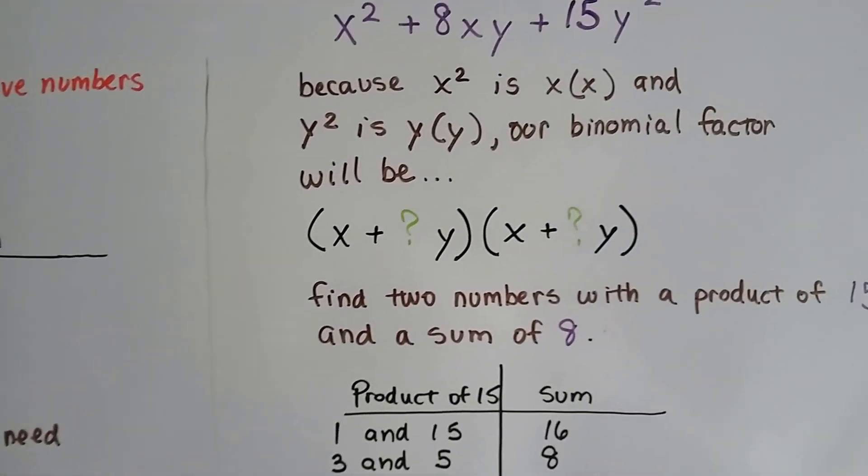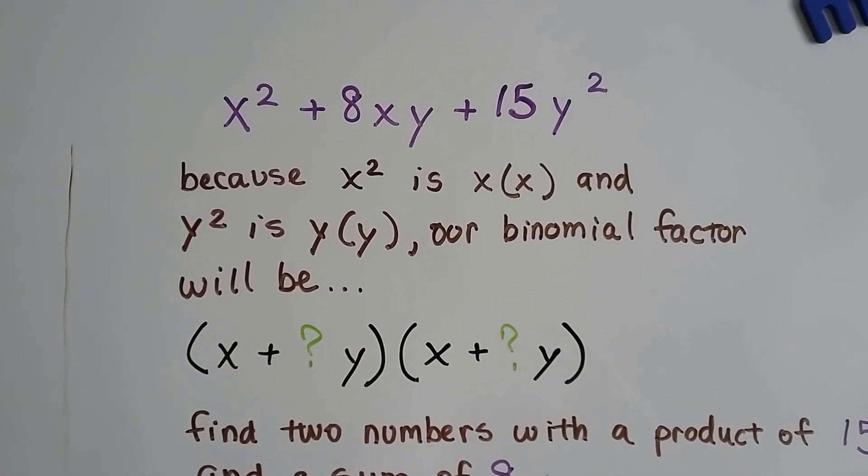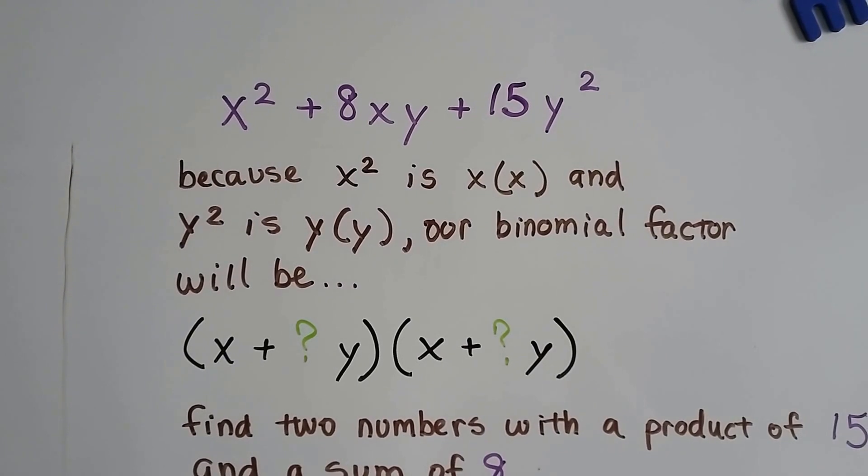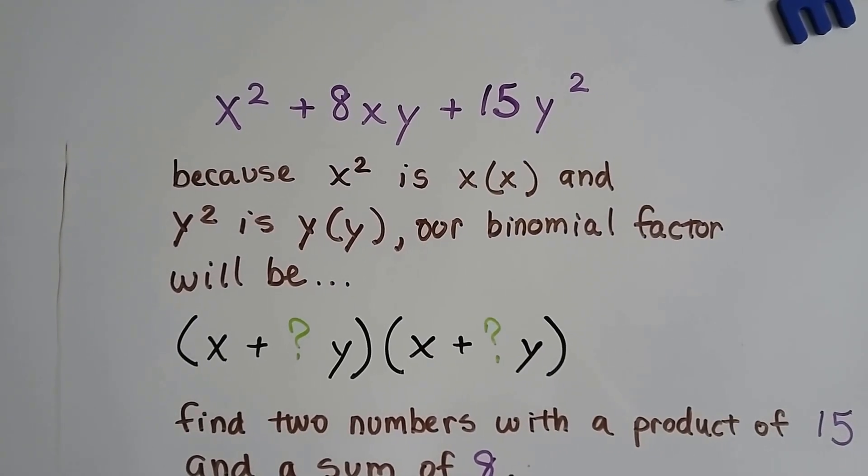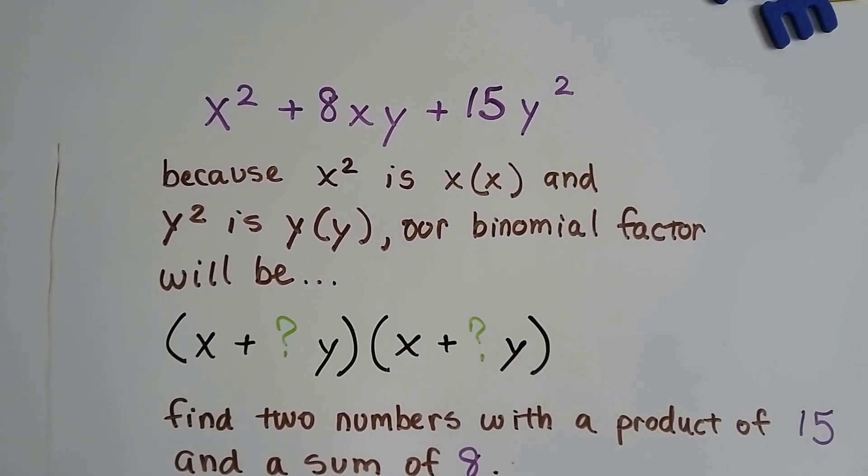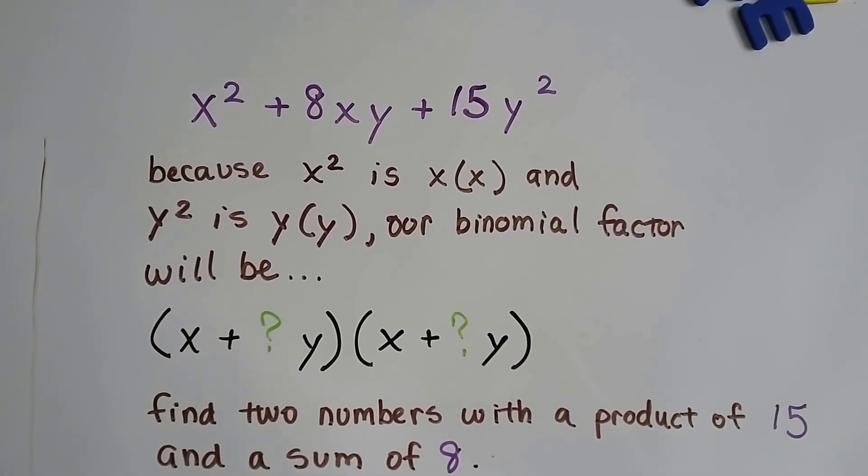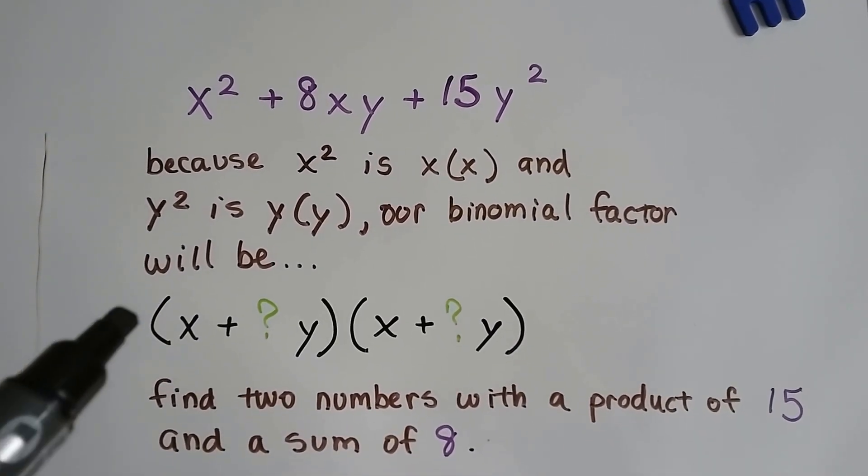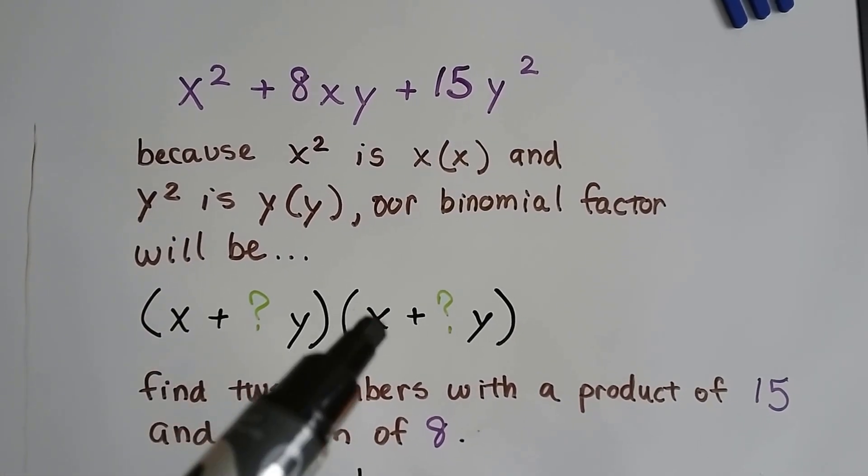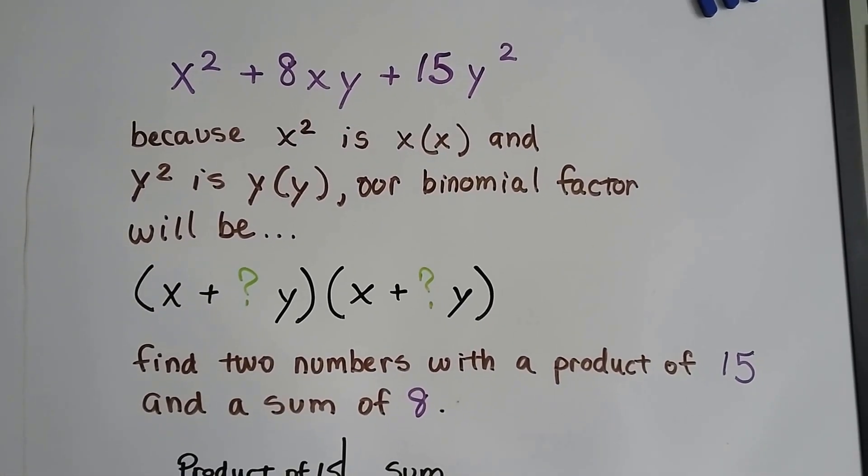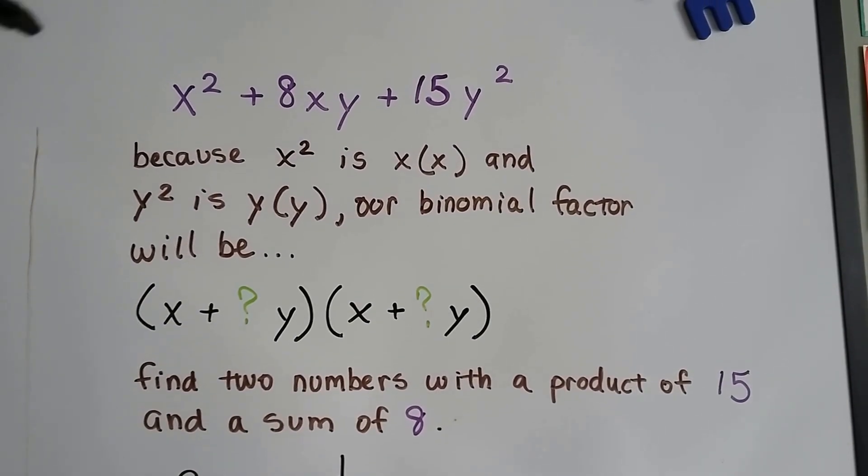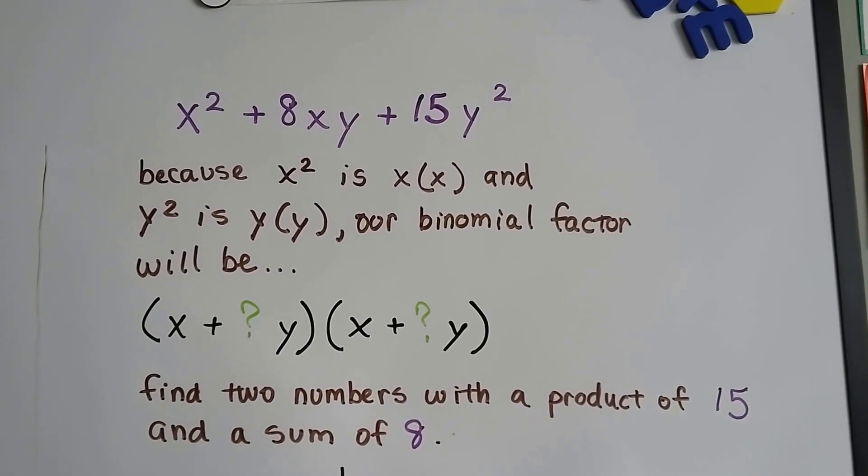So now we've got x² + 8xy + 15y². Now, because the x² is there, we know it's x times x. And there's a y², which is y times y. Our binomial factor is going to be a little bit different. It's going to be x plus something y, x plus something y. So we can write those in right away if we see this x² here and this y² there.